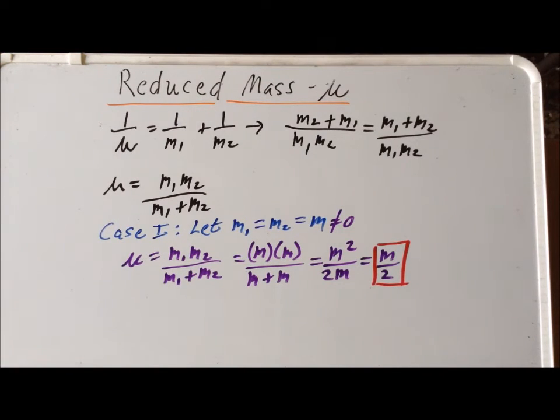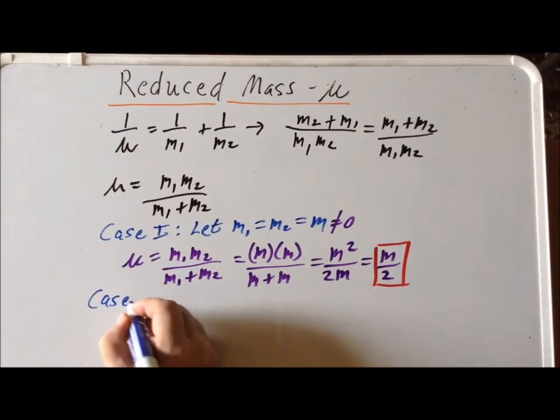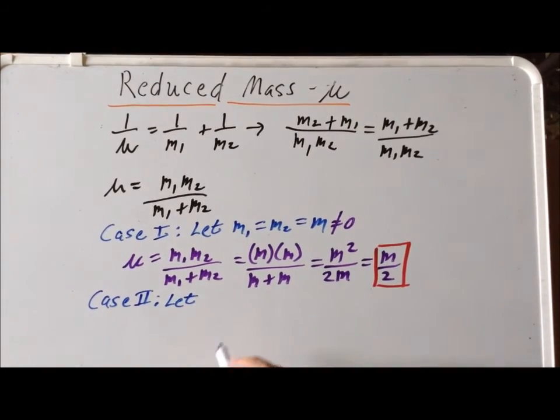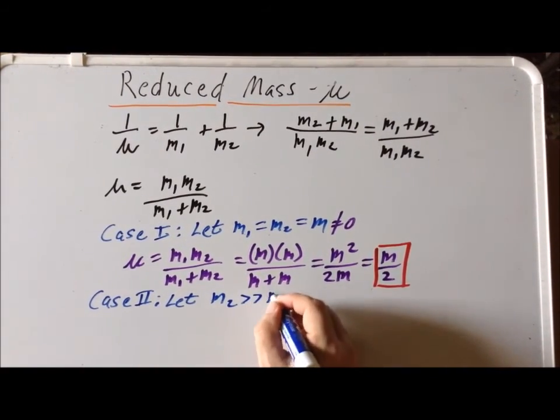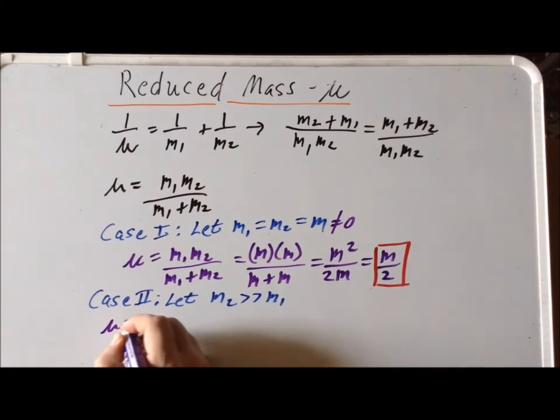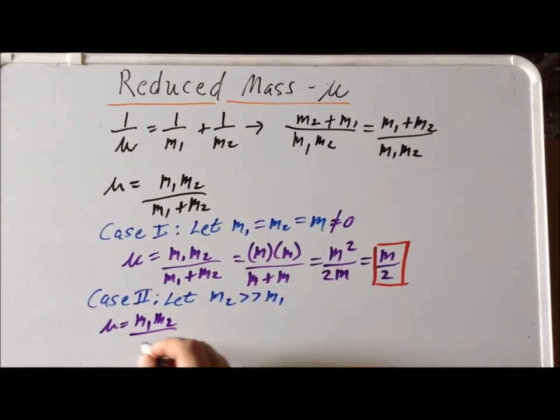What is the second case? Well, for the second case, called case 2, let's assume that M2 is very much more massive than M1. So the mass of M1 is insignificant compared to M2. So again, our reduced mass is equal to M1 times M2 divided by M1 plus M2.